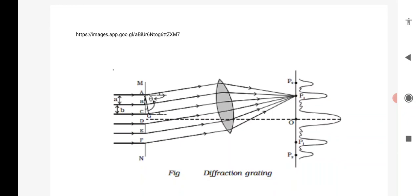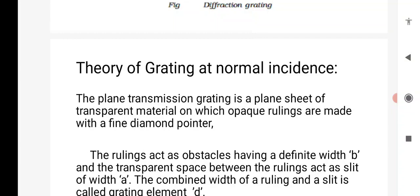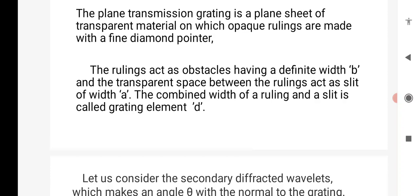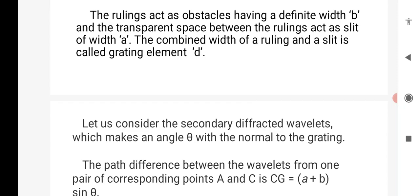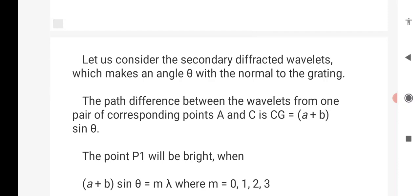The plane transmission grating is a plain sheet of transparent material on which rulings are made with a fine diameter pointer. Here, the rulings act as an obstacle having a definite width B, and the transparent space between the rulings act as slit of width A. The grating element is D. Let us consider the secondary diffracted wavelets which make an angle theta with the normal to the grating. The path difference between two wavelets is given by CG equals A plus B into sin theta.